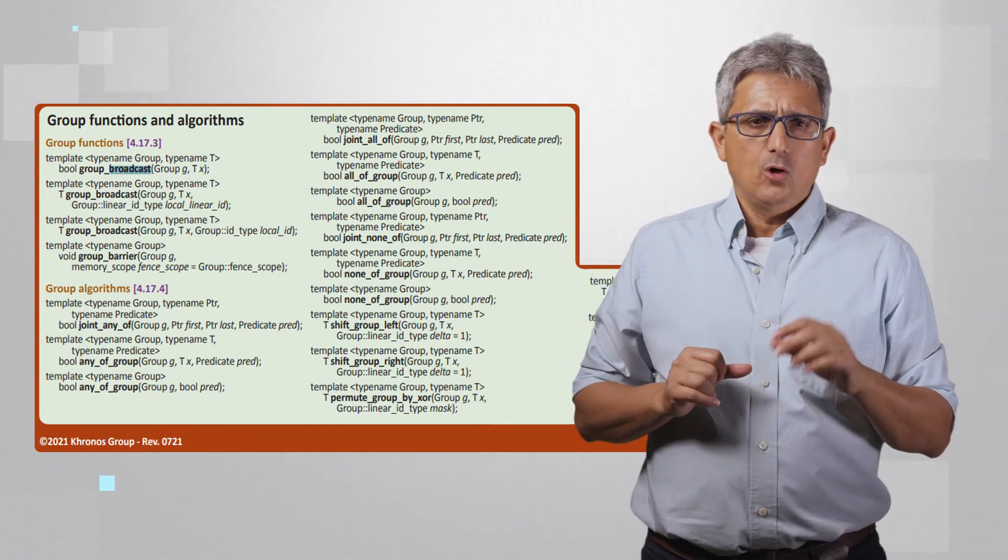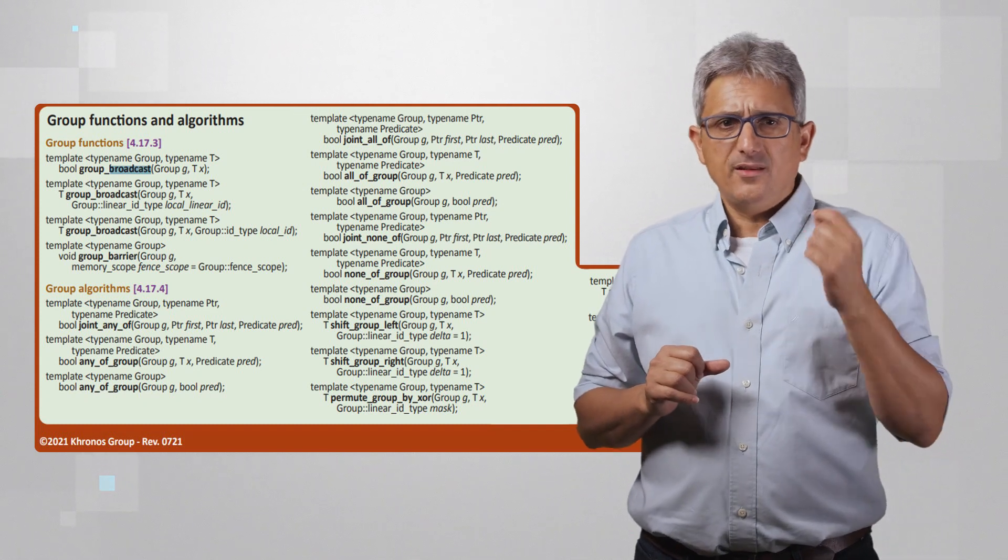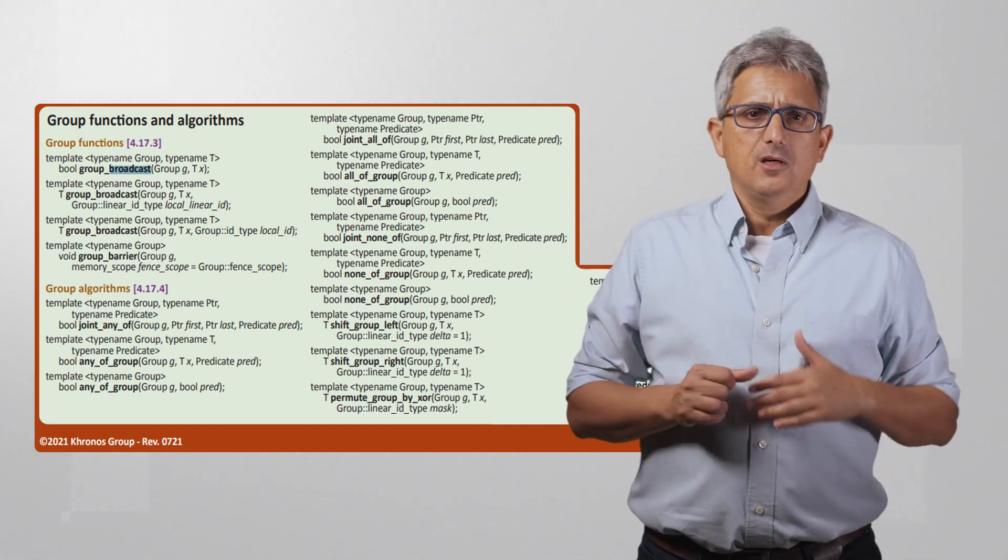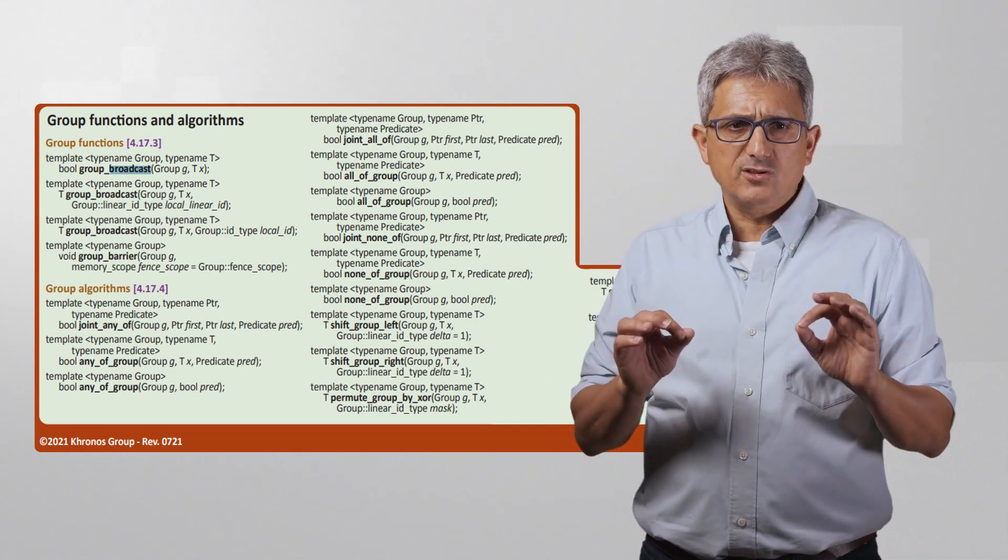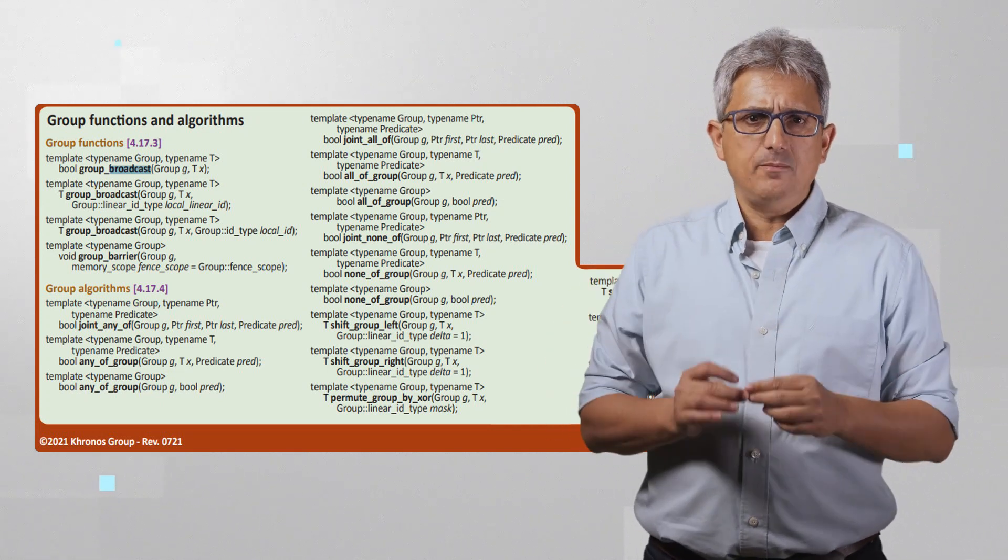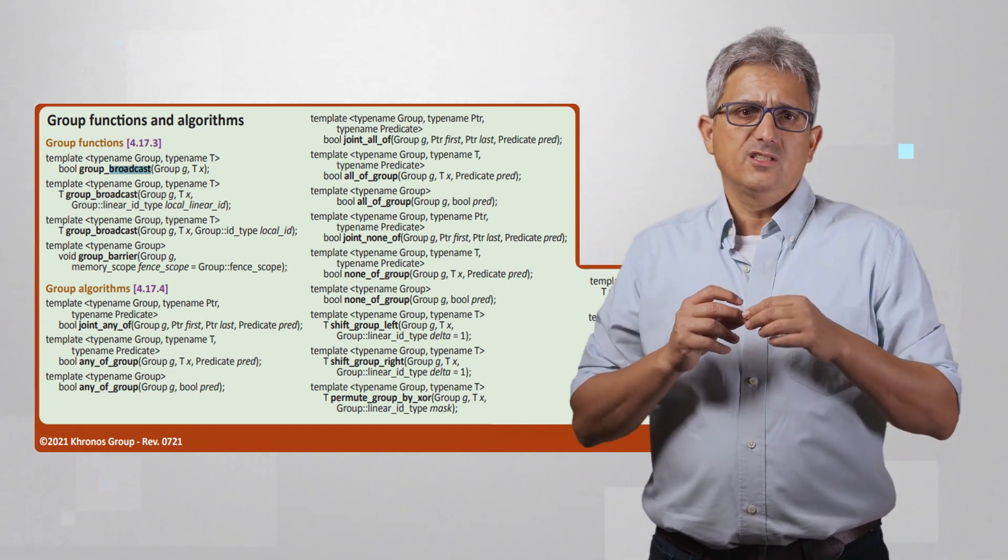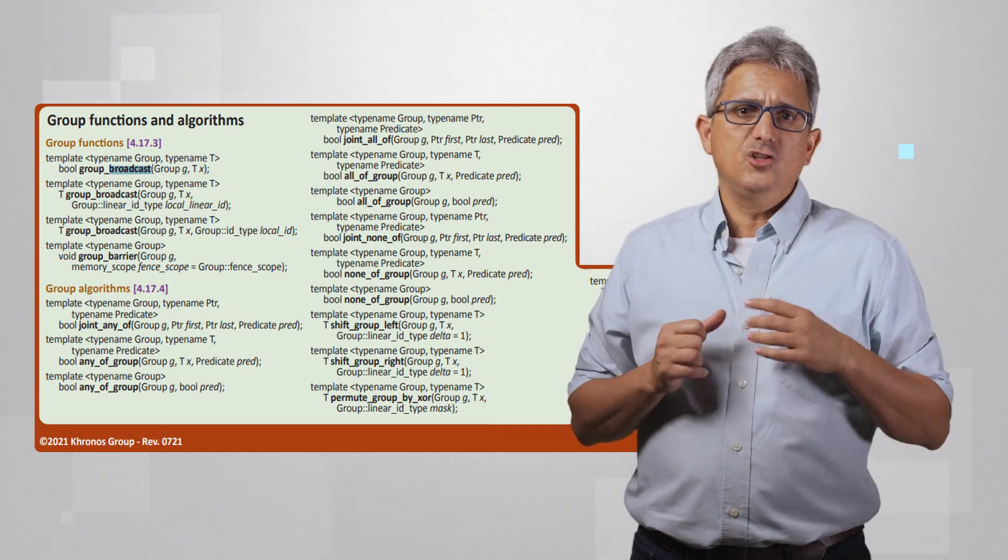You can find the list of group operations in the SYCL documentation. It could be select specific item, shift, permute, and more. And yes, these operations will be done inside the same EU using the local EU memory and hardware. So as fast as the GPU can execute.